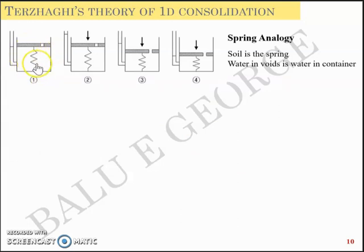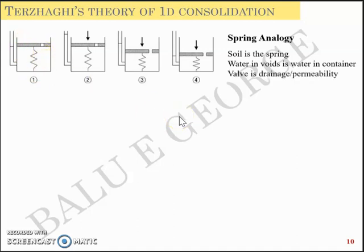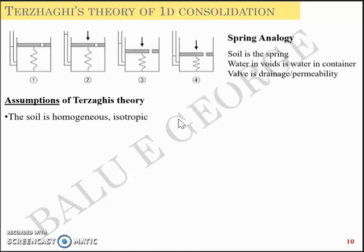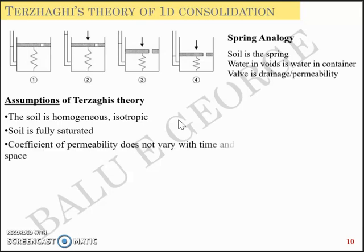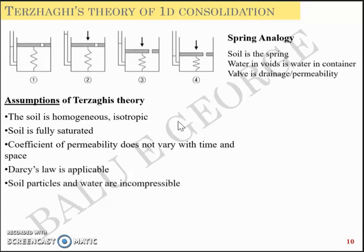The water inside the container is analogous to the water inside the soil particles or the matrix, and the valve you see above the spring on the cap is the drainage or the permeability of the soil. The assumptions of Terzaghi's theory are: the soil is isotropic and homogeneous, fully saturated, the coefficient of permeability does not vary with time and space, Darcy's law is applicable, and soil and water particles are incompressible.